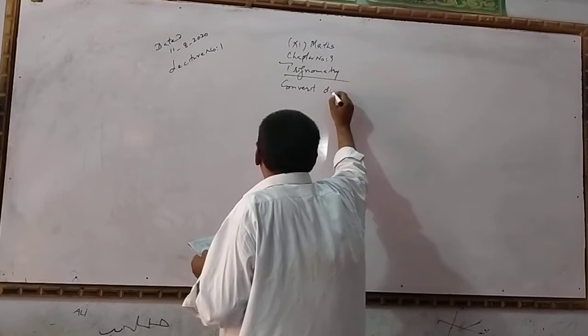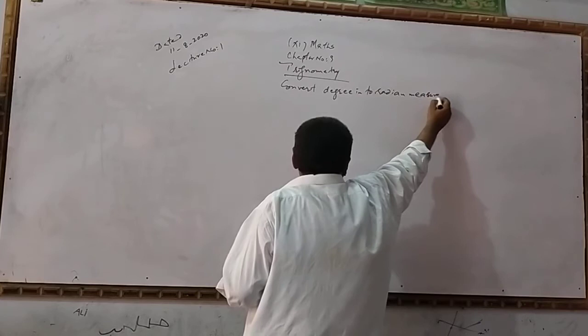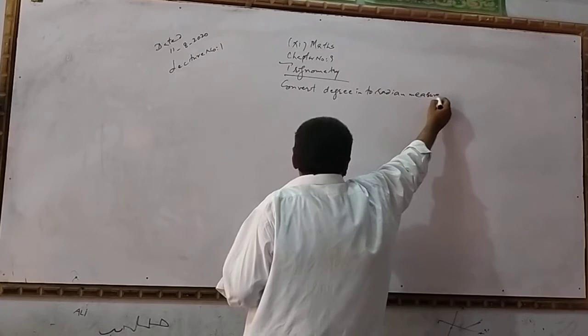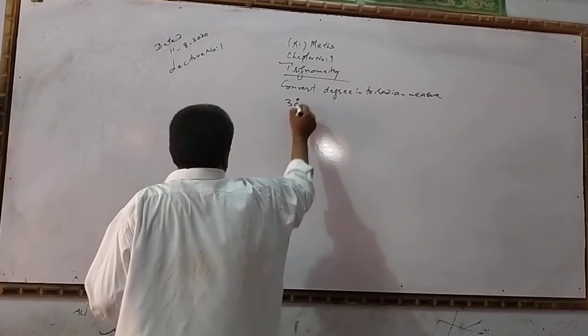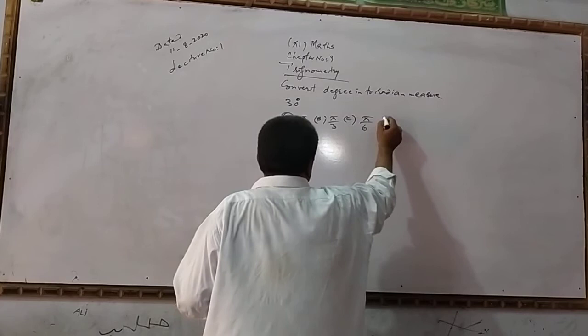Now let's convert degrees to radians. For 30 degrees, the options are: A) π/2, B) π/3, C) π/6, and D) π/4.